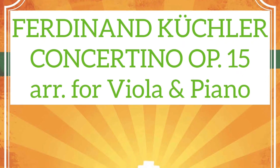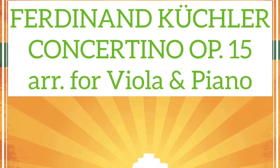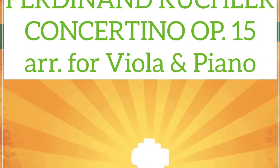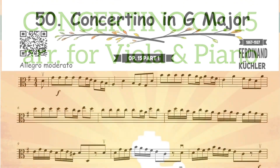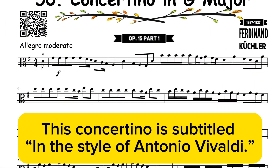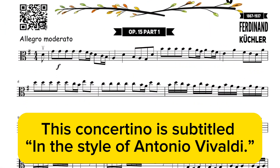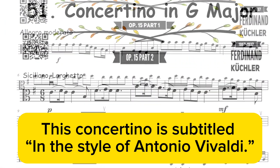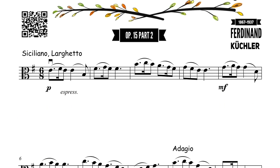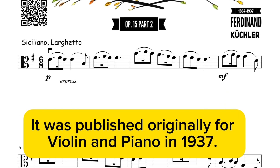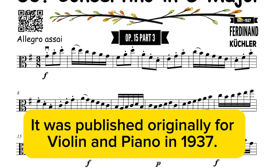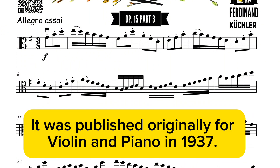Concertino Op. 15 by Ferdinand Keillor, arranged for violette and piano. This concertino is subtitled 'in the style of Antonio Vivaldi.' It was published originally for violin and piano in 1937.